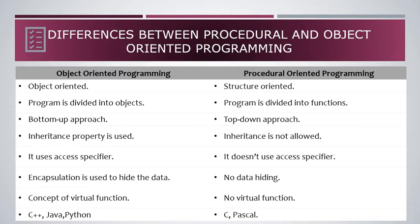In object-oriented programming we use the bottom-up approach, and in procedural we use the top-down approach. Bottom-up means we first create small programs and then integrate them to reach a solution. In procedural-oriented programming, we first create a complex program and then break it into smaller programs — that is the top-down approach. Also, in object-oriented programming we use inheritance, but in procedural-oriented programming we do not.